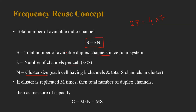Similarly, if S=30 and each cell requires at least 4 channels, we still select a cluster size of 7. With cluster size 7 and 4 channels per cell, 28 channels are used, leaving 2 extra channels. These extra channels can be allocated to cells with higher traffic. So in this case, some cells receive 4 channels and higher-traffic cells receive 5 channels.